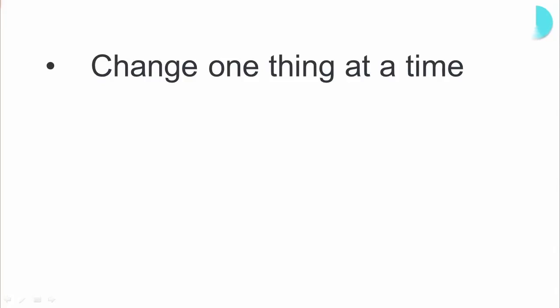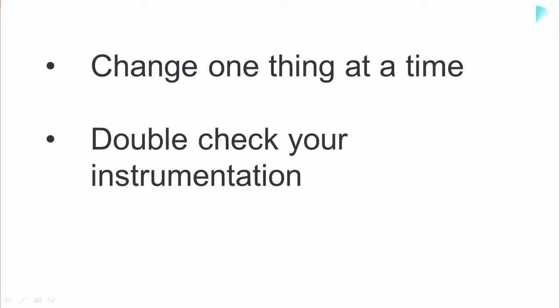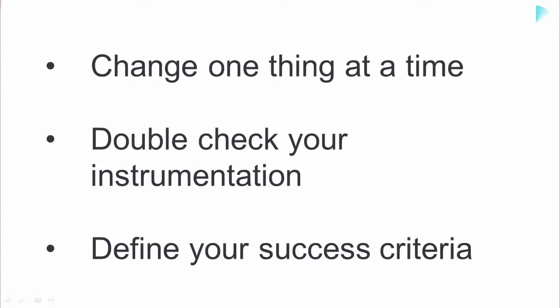To sum up, you need to be scientific in your experiments. You can only change one thing at a time — otherwise you won't be able to determine the good changes from the bad. Secondly, be skeptical in your instrumentation. If there's something that doesn't look right, you need to double-check your numbers and spend time actually testing your interactions and the events associated with them. And lastly, you need to define your success criteria up front. You need to know your business metrics inside out and decide on where you want them to go before you begin experimenting.